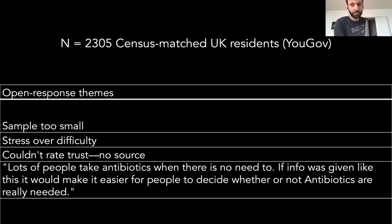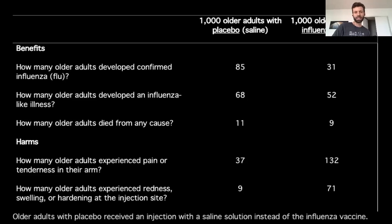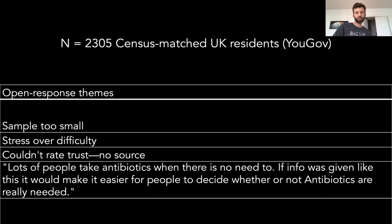Some very interesting feedback emerged. A common theme was people saying 'the sample was too small to make those conclusions.' That's fascinating — we showed 1,000 older adults in each group, but this came from a meta-analysis of much larger studies. The problem was we didn't show the source or explain that this was a compilation of evidence from Cochrane reviews. We also told you earlier to keep denominators the same for comparison — but participants didn't realize that 1,000 was a communication device, not the actual study size. That's exactly the kind of thing you find out only when testing.